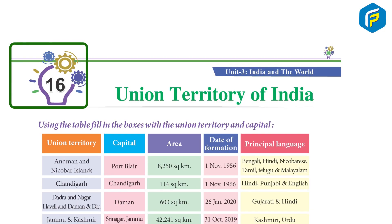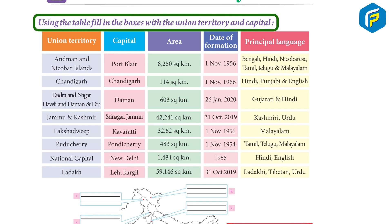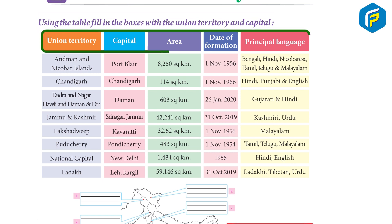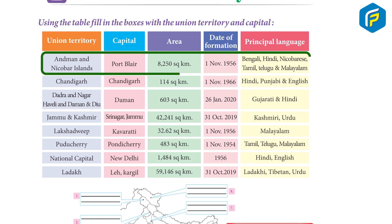Chapter 16: Union Territories of India. Using the table, fill in the boxes with the union territory and capital, area, date of formation, and principal language. Andaman and Nicobar Islands: capital Port Blair, area 8,250 square kilometers, date of formation 1 November...